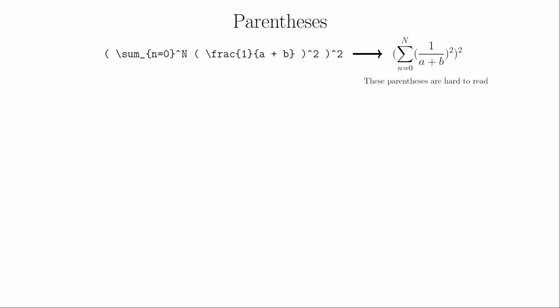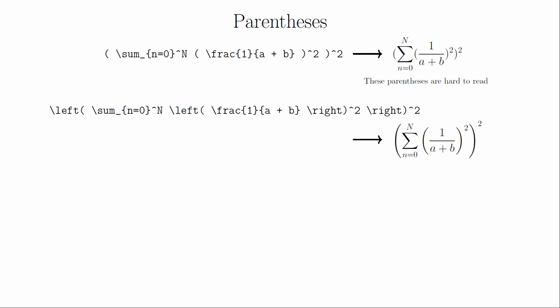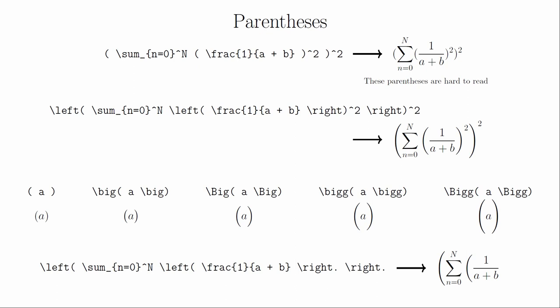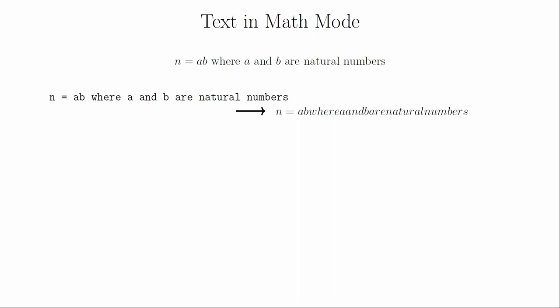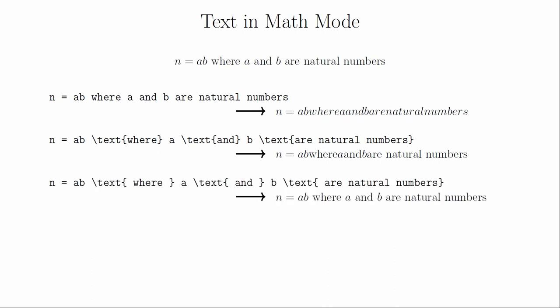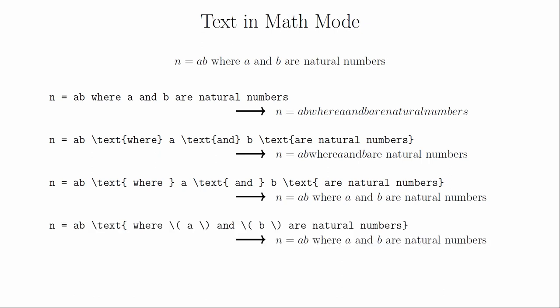You can use the standard parentheses and square brackets available on the keyboard, but they can sometimes be the wrong size for the application. You can let LaTeX choose the size of your brackets by using left and right with your brackets, or you can manually choose the size using one of four modifiers. A word of warning: left and right must always come in pairs so that LaTeX can calculate the height. If you only need a symbol on one side, you can create a blank symbol by using left period or right period. If you want to write text in the middle of math mode, you cannot simply type the text — LaTeX will interpret the whole thing as a product of variables. Instead, you need to use the text command.